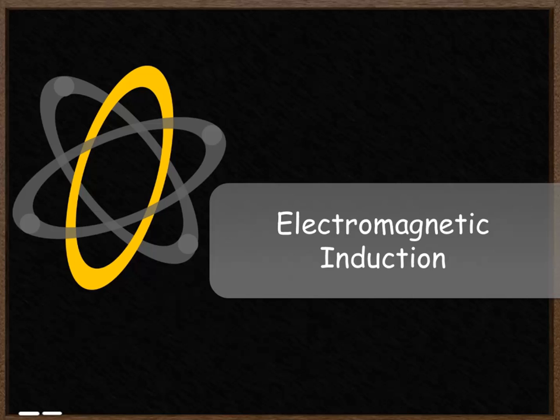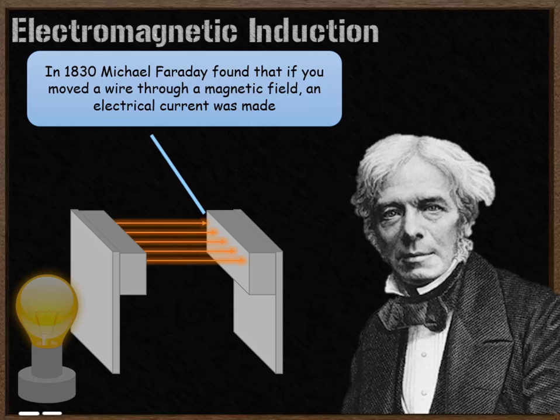In this video we're going to look at the process of electromagnetic induction. In 1830, Michael Faraday found that if you moved a wire through a magnetic field between two magnets, you make an electrical current.